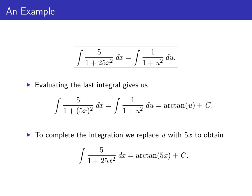And to complete the integration, since we started with a function of x, we should wind up with a function of x. So we replace u with 5 x to obtain the integral of 5 over 1 plus 25 x squared dx is the arctangent of 5 x plus a constant. And we're done.